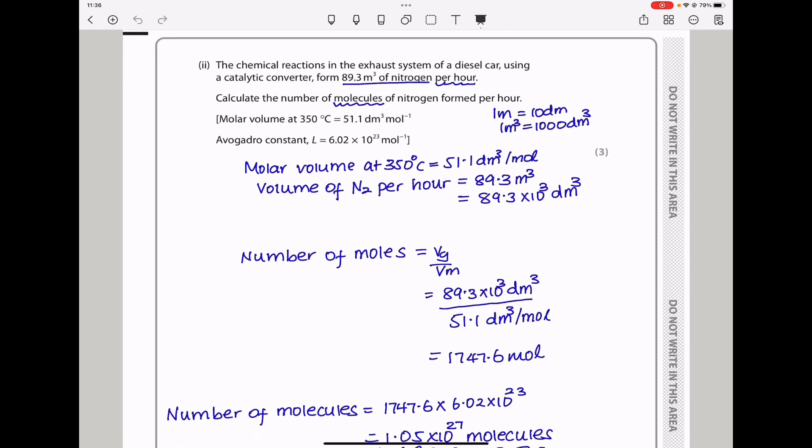And next they say the chemical reactions in the exhaust system of a diesel car using a catalytic converter form 89.3 meters cubed of nitrogen per hour. They want us to calculate the number of molecules of nitrogen formed per hour. They've given us the molar volume at that temperature as that. And then they've given us Avogadro's constant. So I said molar volume given to us was that. But the volume of nitrogen per hour was 89.3 meters cubed. I wanted to first convert this to decimeters cubed because the other components given to me were in decimeters cubed. So we know one meter is 10 decimeters and one meter cubed is a thousand decimeters cubed. So I'm going to multiply this by 10 power 3, which is actually a thousand to create that in decimeters cubed.